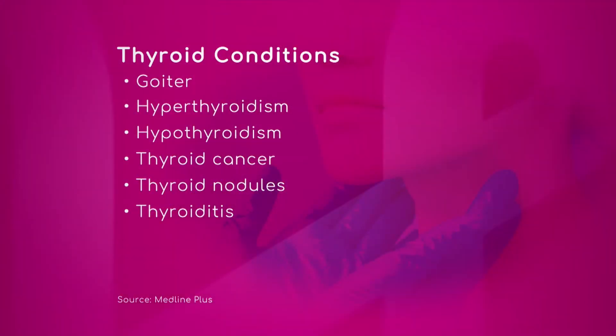You talked about nodules as well — tell us a little more about thyroid nodules. Thyroid nodules are atypical. They can be benign, they can be atypical, they can be borderline on thyroid cancer, or they can actually be cancerous.